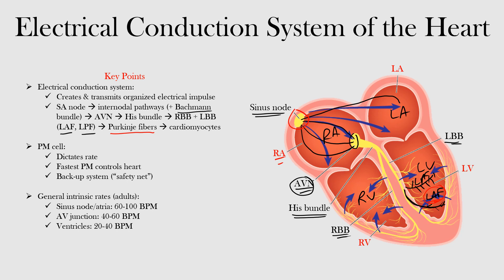The SA node receives input from various areas of the body — the nervous system, circulatory system, and endocrine system all send signals into the sinus node, and it responds to the body's needs. The normal pacemaker rate of the sinus node is between 60 and 100 beats per minute in adults; this may be slightly faster in children, but we'll use the adult range of 60 to 100 beats per minute.